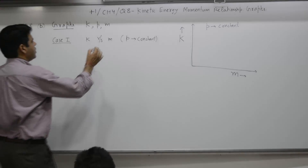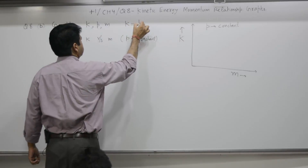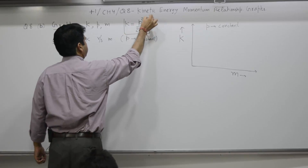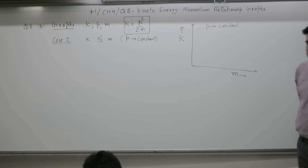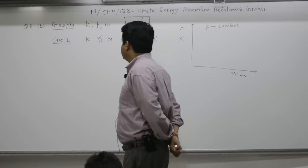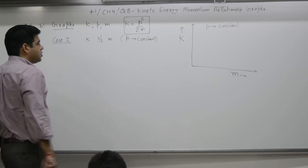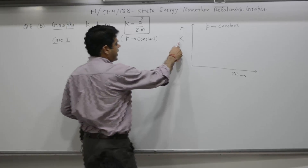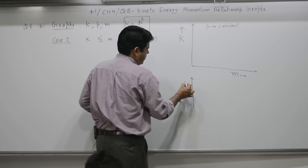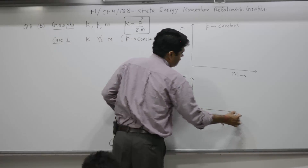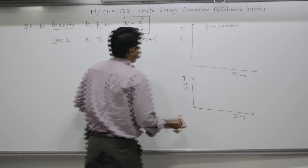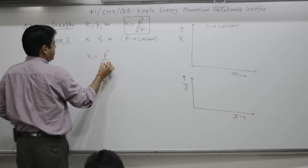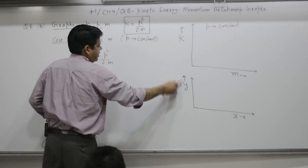The relationship is K = p²/2m. Standard procedure: K is along the y-axis, m is along the x-axis. The first step is to write the relationship. K = p²/(2m). Since K is along the y-axis, write y = (p²/2) · (1/x). Since p is constant, p²/2 is also constant.